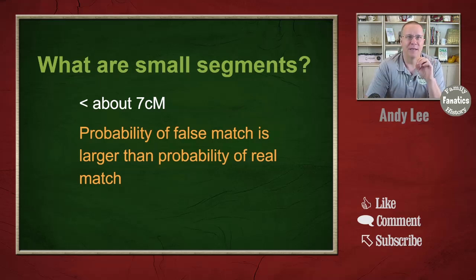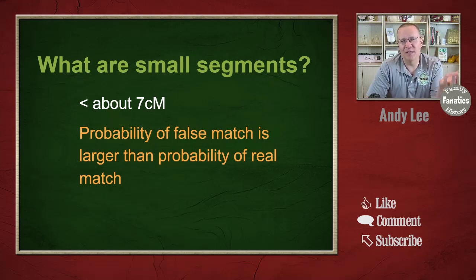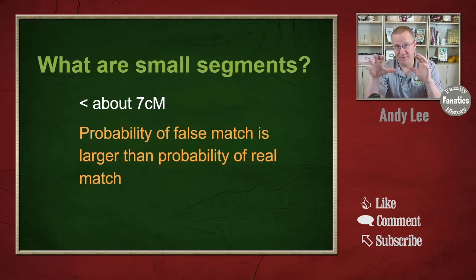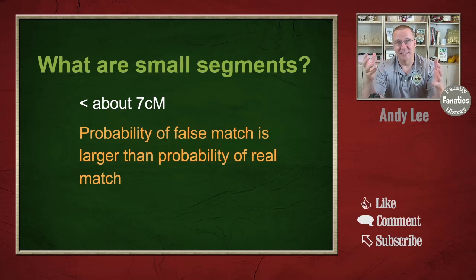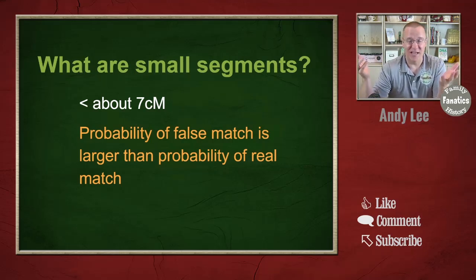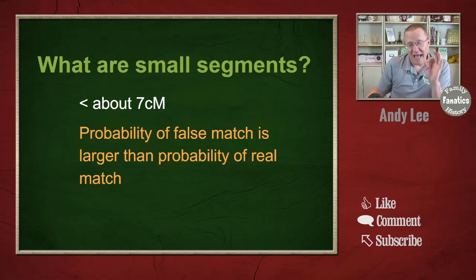The other thing about small segments is that this is where the probability of a false match begins to be larger than the probability of a real match. One thing to look at for a false match: if you have that match and neither one of your parents has that match, then it's a false match. And that usually happens with these really small centimorgans. With that definition, let's take a look at some data.